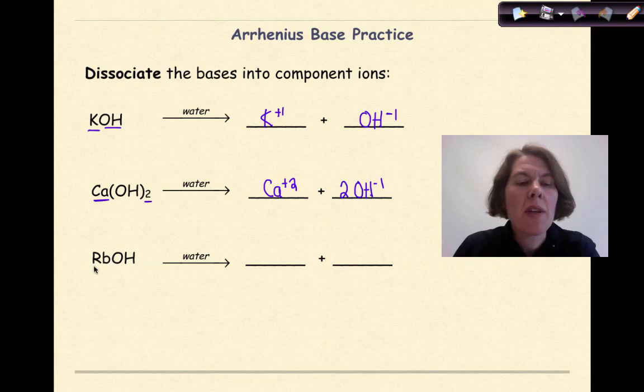Then finally, RbOH. Rubidium is coming from group 1. So Rb plus 1. And it's in a 1 to 1 ratio with the hydroxide. So OH minus 1.